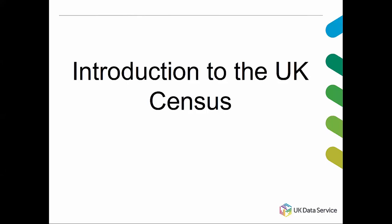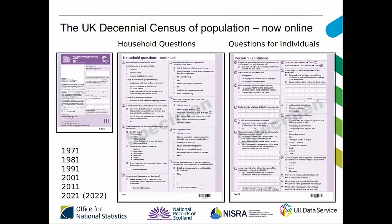The census is a survey of the UK population held every ten years by the devolved national statistical agencies. In England that's the Office of National Statistics, in Scotland it's National Records of Scotland, and in Northern Ireland it's NISRA. In England it took place in 2021, but in Scotland because of the Covid pandemic it's only happening this year. Census day 2022 in Scotland is this coming Sunday, so if you're in Scotland and haven't filled your census form, do it by Sunday.